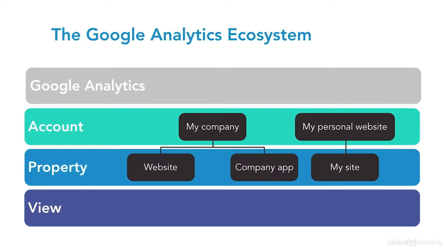Within an account is at least one property. We generally recommend a business to have a property for each website or platform. By platform, I mean, for example, if you have both a website and an application for your business, like a mobile application, you may have two properties, and that will report on each individual platform — so one for web, one for the mobile apps.